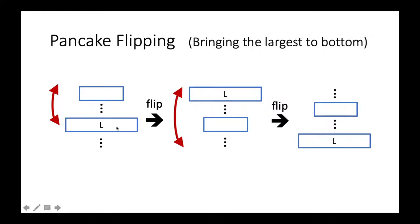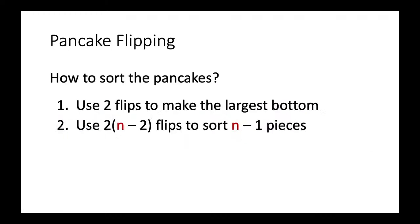We locate the largest piece, then use one flip to bring it to the top. After that, we flip everything so the largest piece goes to the bottom. Using two flips we make the largest piece bottom. We repeat this: two flips to make the second largest settle on top of the largest, and so on.